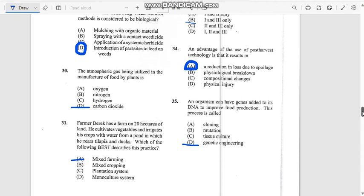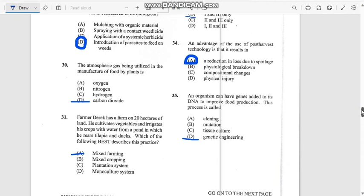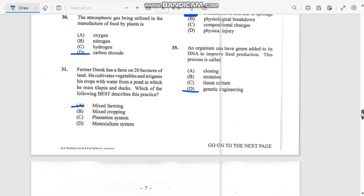Number 34: An advantage of the use of post-harvest technology is that it results in a reduction in loss due to spoilage. That's post-harvest technology.